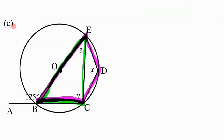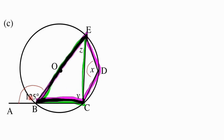For part c, it gets a little more complicated. We have 125 degrees, and looking for x, we can see that 125 degrees is an exterior angle of cyclic quad BEDC. Since BEDC is a cyclic quad, the exterior angle equals the opposite interior angle x, so x equals 125 degrees — exterior angle of cyclic quad.